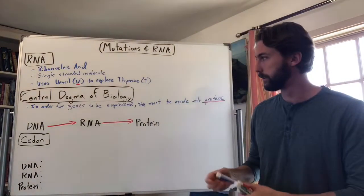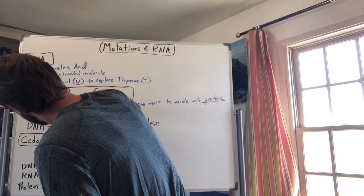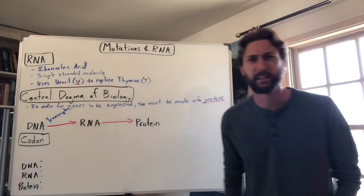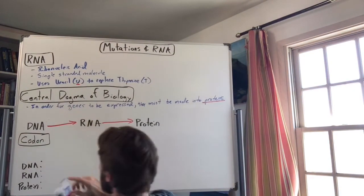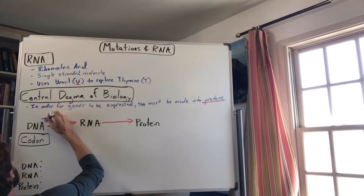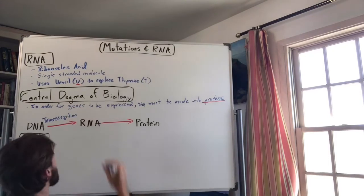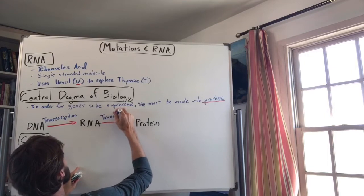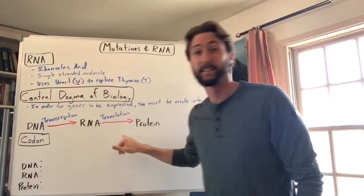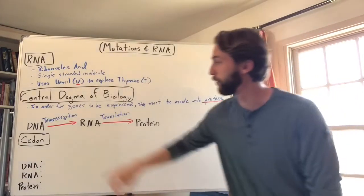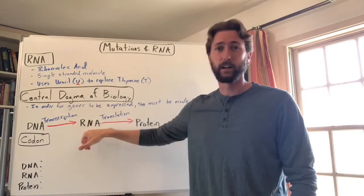When you turn DNA into RNA, that's called transcription. And RNA made into protein — that's called translation. So in another video we'll get into the details, but right now the big idea of the central dogma is: DNA turns into RNA, and RNA then builds proteins.